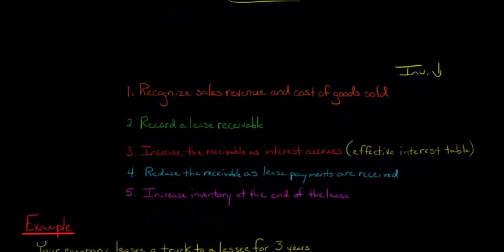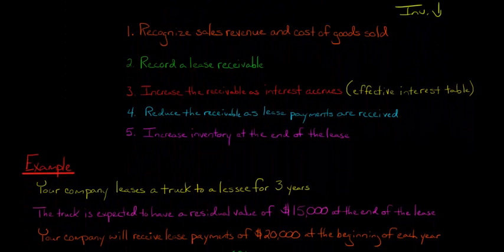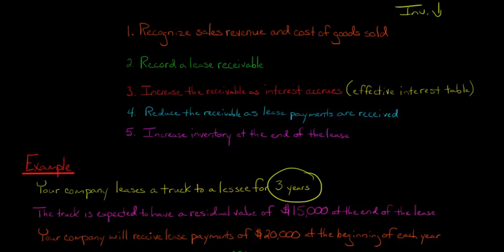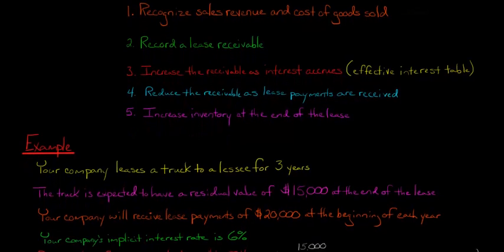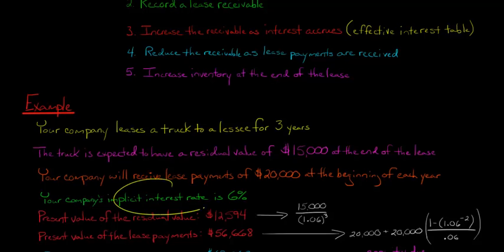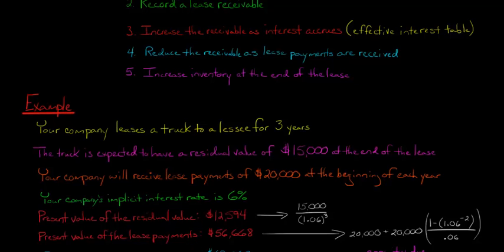Let me show you how this all works with an example. Let's say your company is the lessor and you lease a truck to a lessee for a three-year period. That truck will have a residual value of $15,000 at the end of year three, and your company will receive lease payments of $20,000 at the beginning of each year — three payments of $20,000. Your company's implicit interest rate is 6%, so we can discount the residual value to a present value of $12,594. The present value of the lease payments, which are an annuity due, is $56,668.